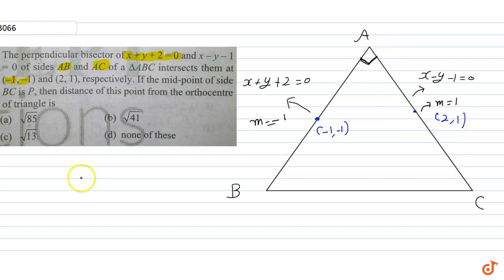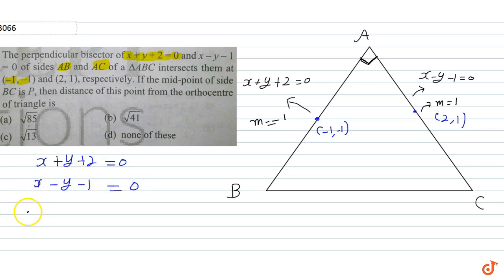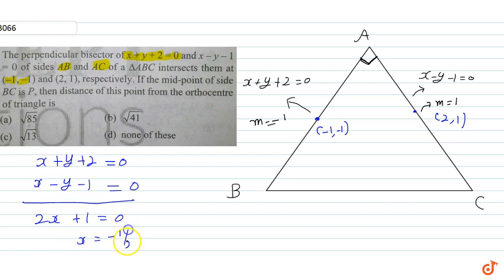A के coordinates हम निकाल सकते हैं। हमें पता है x+y+2=0 और x-y-1=0 है। दोनों को add करने पर 2x+1=0, तो x = -1/2, और y = -3/2। So, A = (-1/2, -3/2).